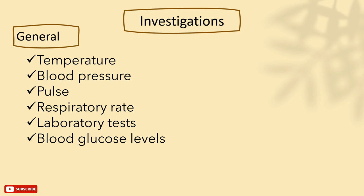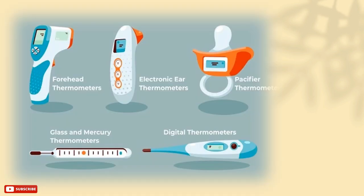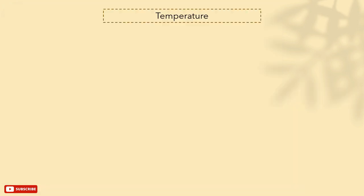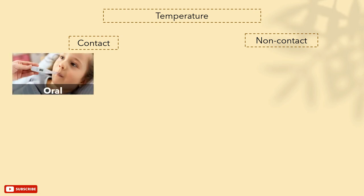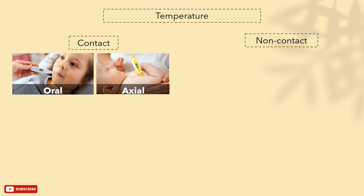Starting with temperature. Temperature can be measured in two different methods: using contact or non-contact thermometers. Contact thermometers, like oral thermometers, are suitable as long as the person is old enough to hold it inside the mouth and is not a mouth breather, since it requires the person to close the mouth for about one minute. Axillary thermometers are placed in the armpits and the measurement is usually about half a degree lower than the temperature measured orally.